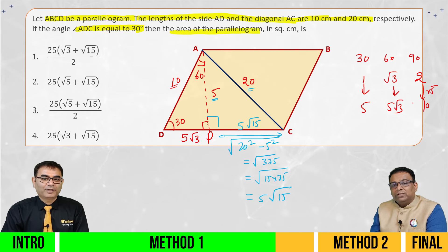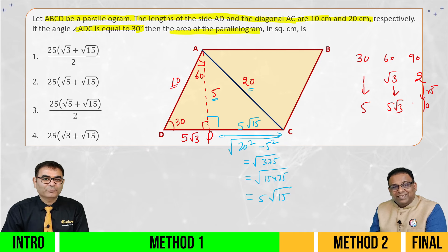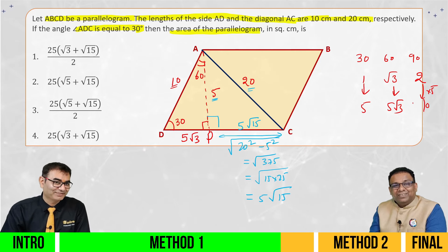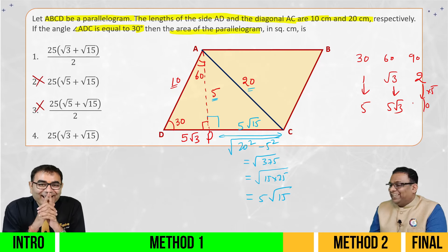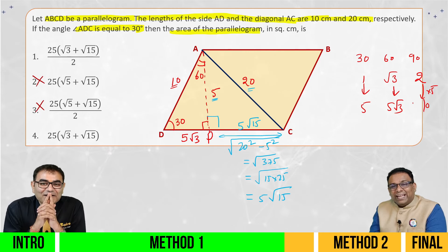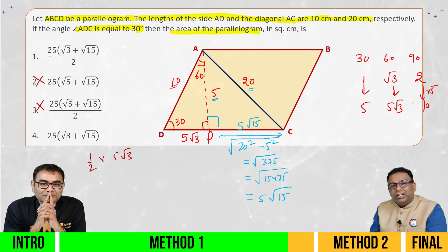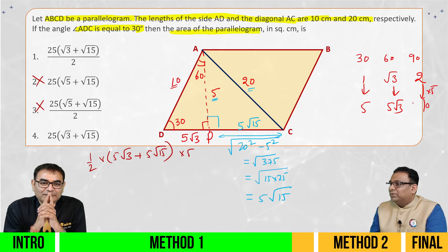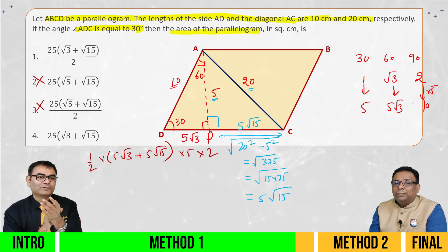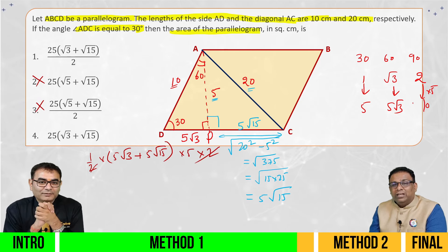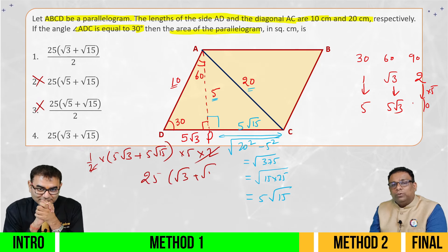So PC's length is 5 root 15. If you look at the options, it is clear to me that root 3 and root 15 should be in combo. So root 5 root 15 should be like this. Option number 2 and 3 should not be done. Now the area of triangle ADC is half into base which is 5 root 3 plus 5 root 15, into height which is 5. And into 2 triangles — so the half and 2 will cancel — giving us 25 into root 3 plus root 15, which is option number 4.